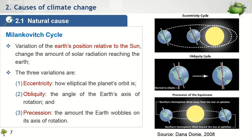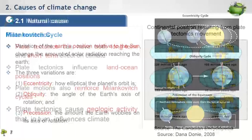The second variation is known as obliquity, which is the change in the direction of the earth's axis. As the earth orbits around the sun, the tilt of its axis relative to the sun changes throughout the years. This variation in axis direction causes change in the amount of sun energy reaching the earth's surface, especially in the middle and high latitude regions. The third variation is known as precession. It is the intensity of the earth's wobble that causes variation in the direction of the northern hemisphere compared to the sun. This variation can cause change to winter and summer climate in terms of length and temperature. Overall, the superposition of these three variations results in a variation in climate pattern over about a hundred thousand years.